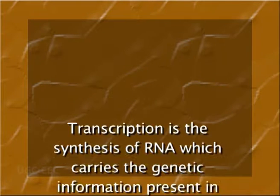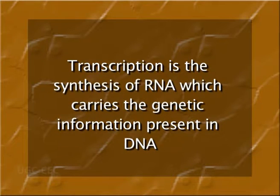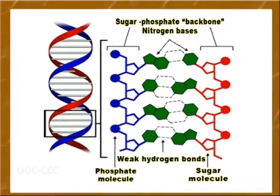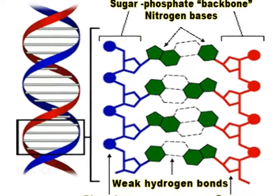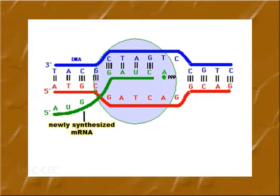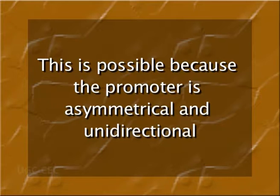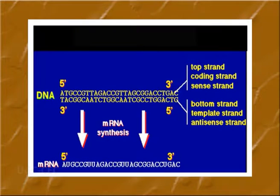Transcription is the synthesis of RNA which carries the genetic information present in DNA. The DNA is double-stranded and can theoretically code for two separate RNA molecules. However, it has been found that only one of the two strands of the gene is transcribed; only in a few exceptional cases are both strands transcribed. This is possible because the promoter is asymmetrical and unidirectional.